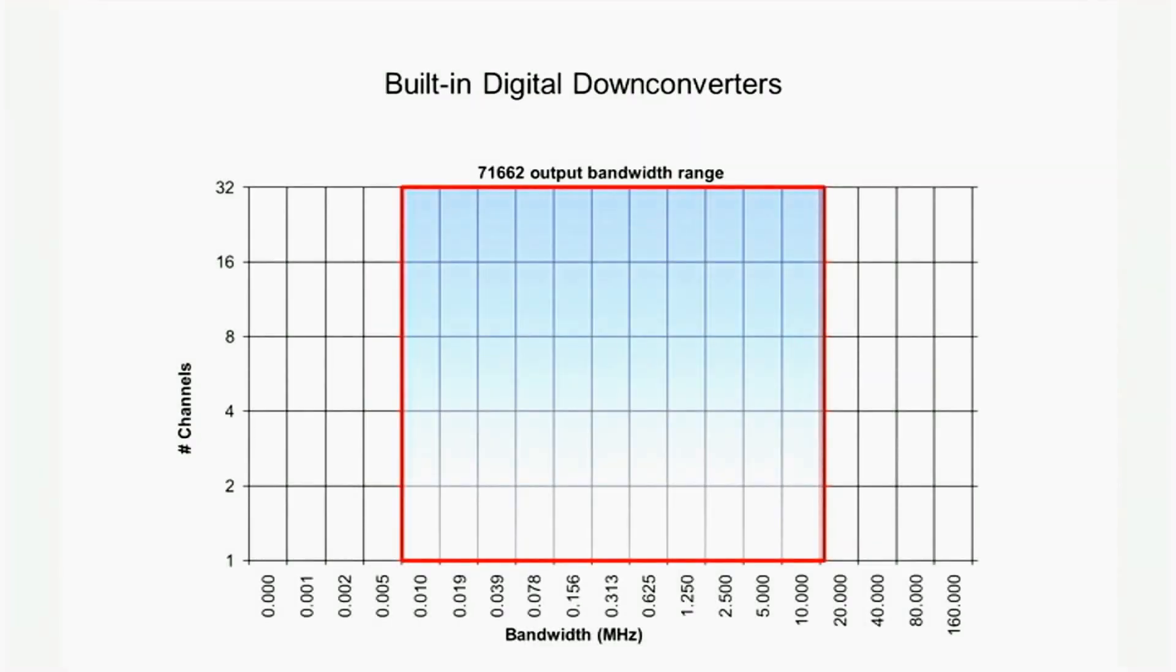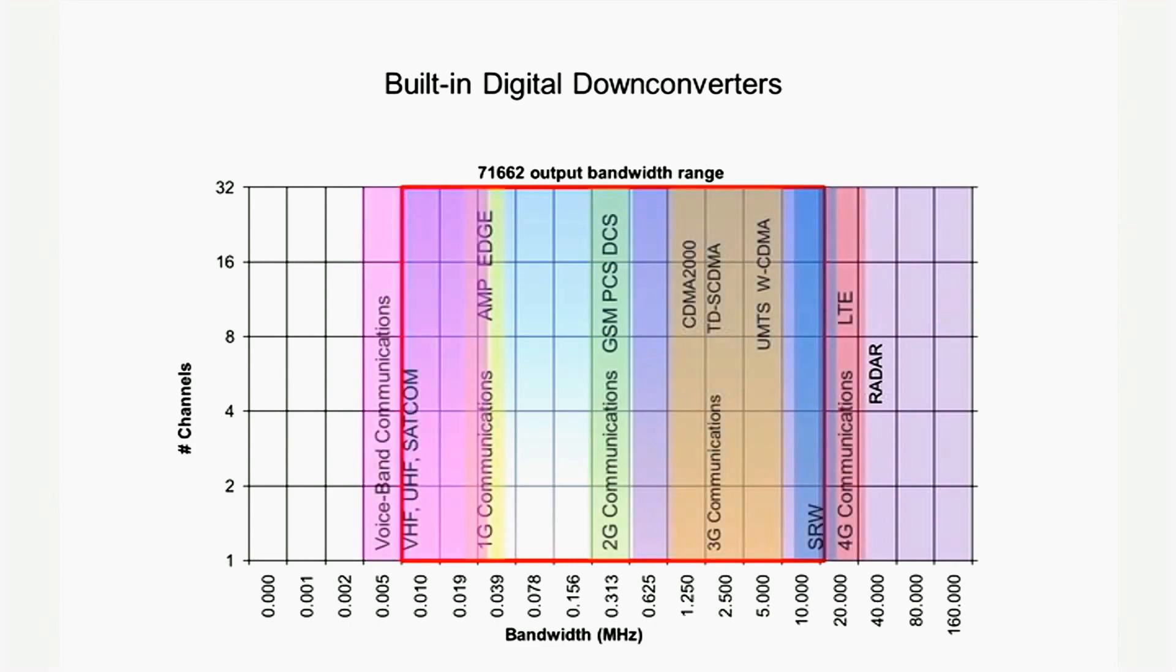With 32 channels and a wide output bandwidth range, the 53662 cores are ideal for radar applications, as well as many wireless communications applications, from telecom to signal intelligence.